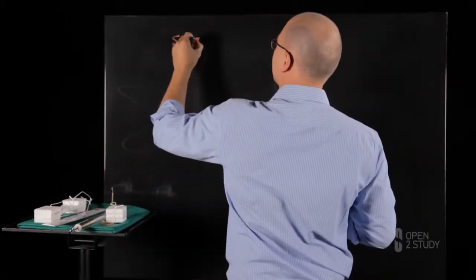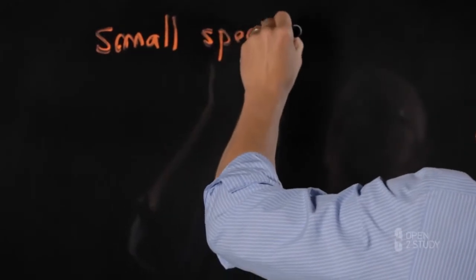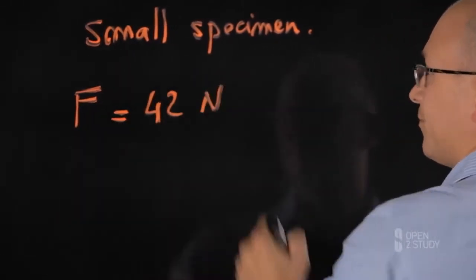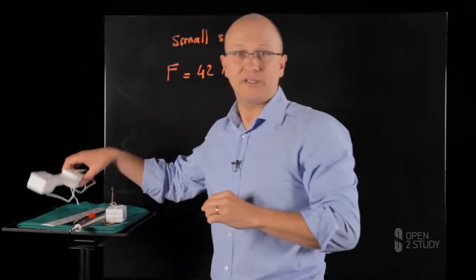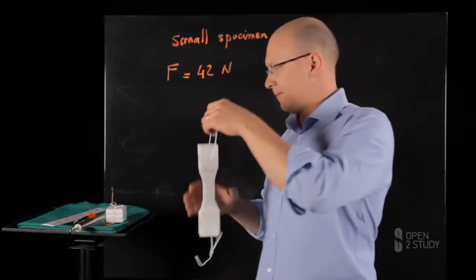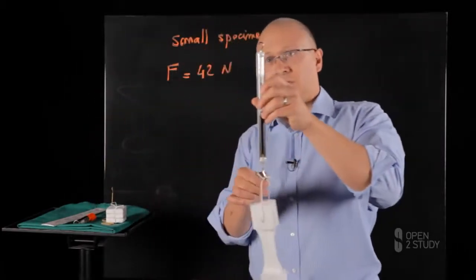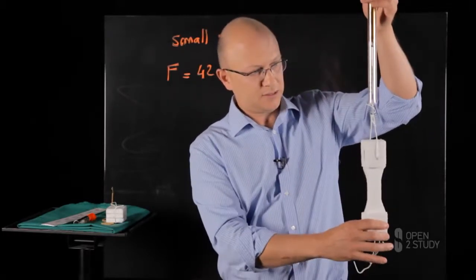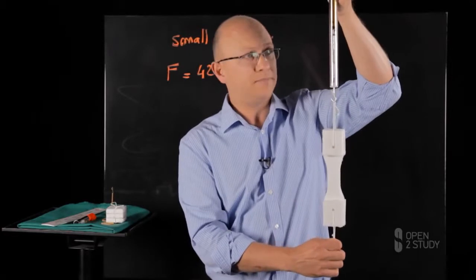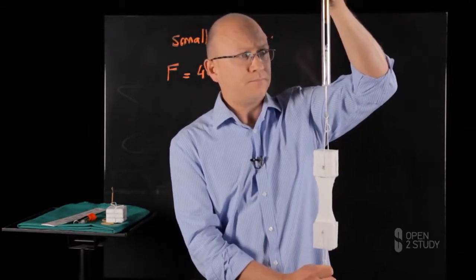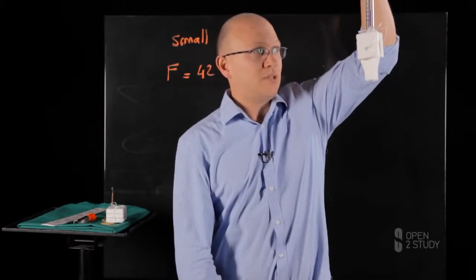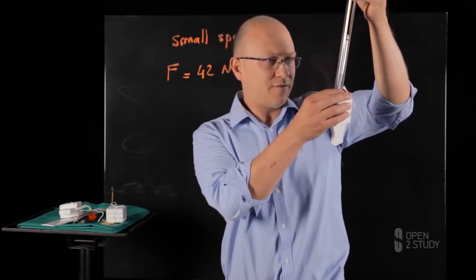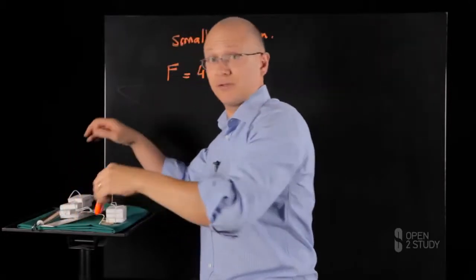So we have the small specimen. And the force to failure is 42 newtons. Now, let's repeat the experiment with a larger specimen. We use the dynamometer again. And similarly, I'll pull until we've reached failure. Here we go. We now have reached about 85 newtons. Let's write the results on the board.